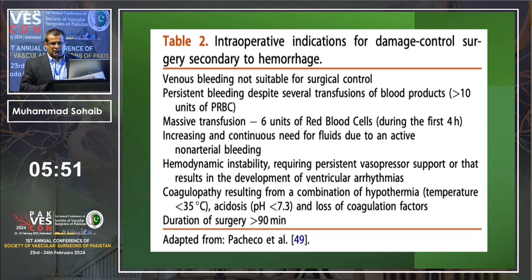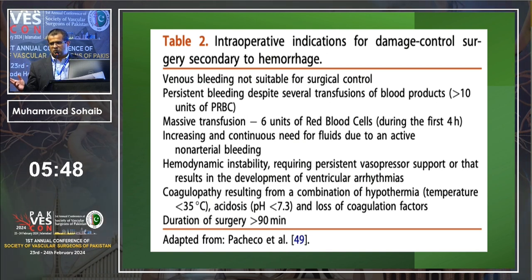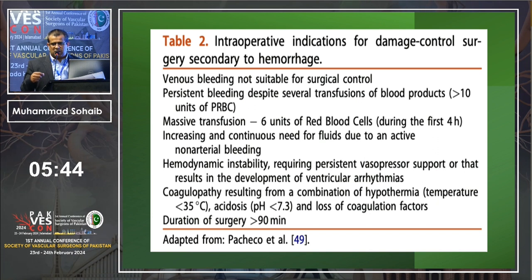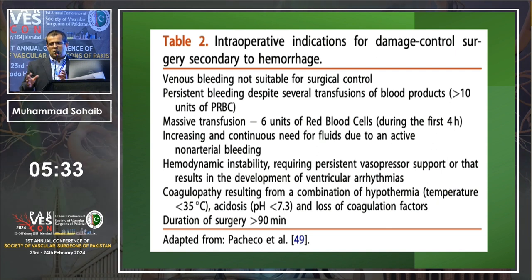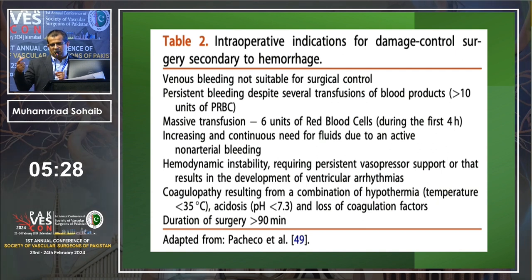Intraoperative indications for damage control: when you are unable to control bleeding from a venous side, when the patient becomes hemodynamically unstable, or when you are requiring many blood products. The indications for damage control are: stop the surgery, secure hemostasis, pack the patient, shift to ICU, maintain normal physiology, reverse the pathology, and then return for surgery.